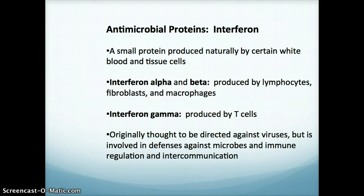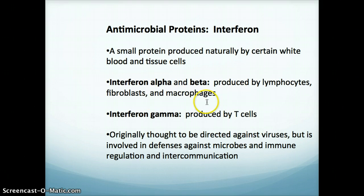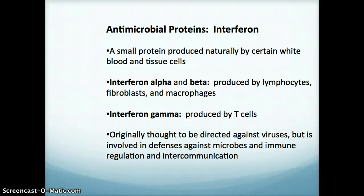There are three main types of interferon. The first two are interferon alpha and beta, which are produced by lymphocytes, fibroblasts, and macrophages. We also have interferon gamma, which is produced by T cells. Although interferon was originally thought to be directed against just viruses, we are now finding that it is involved in the defense against microbes and also plays a role in immune regulation and intercommunication.